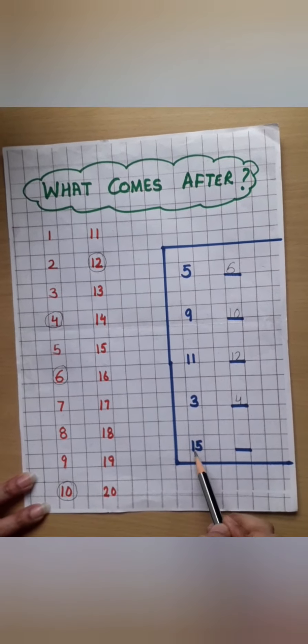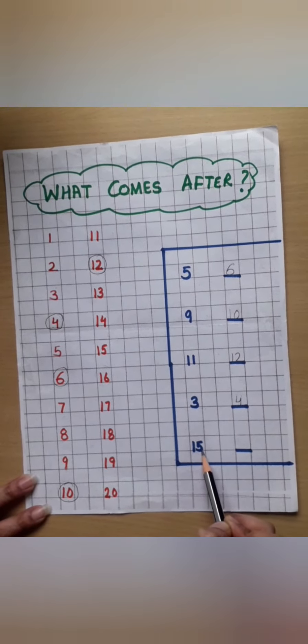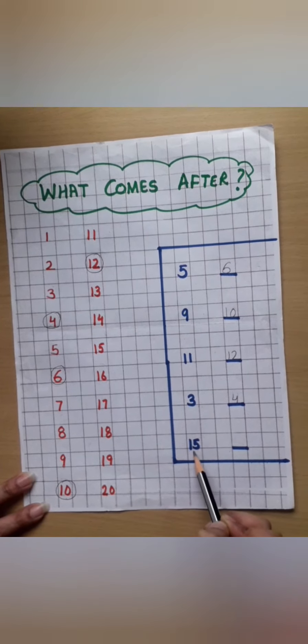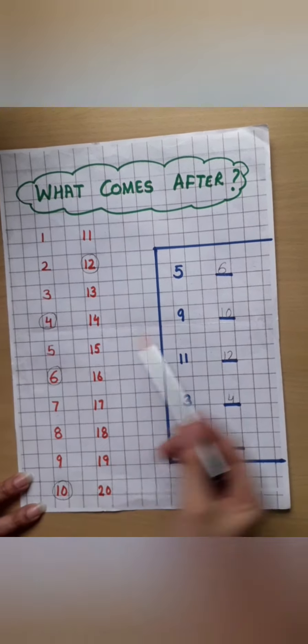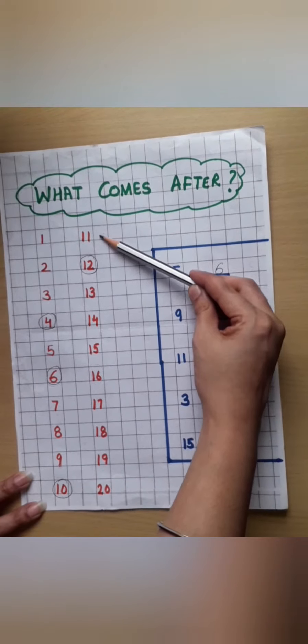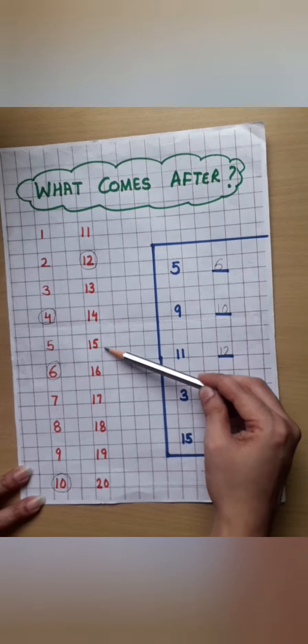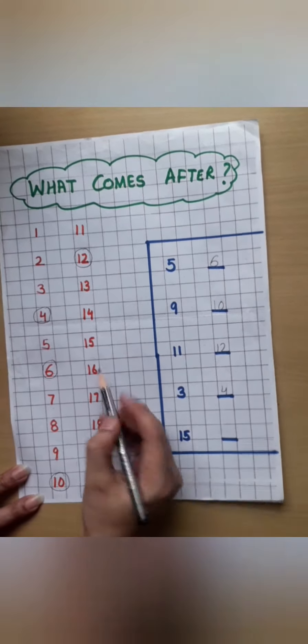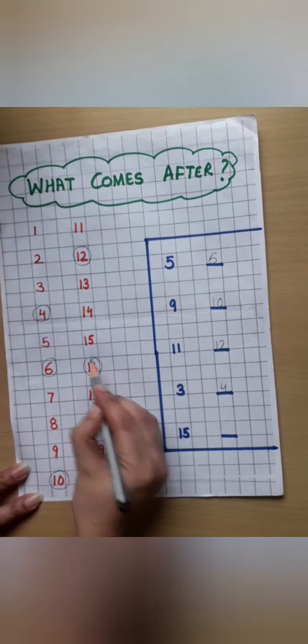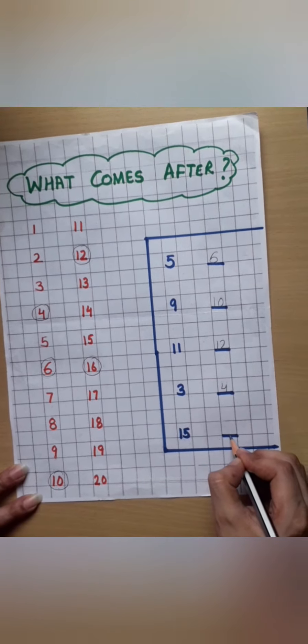Yes kids. This is the number 15. 1, 5, 15. See what comes after 15. Let's count. 11, 12, 13, 14, 15. What next? 16. The number 16. Now write the number 16 here.